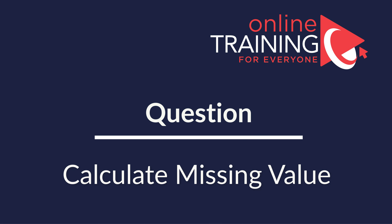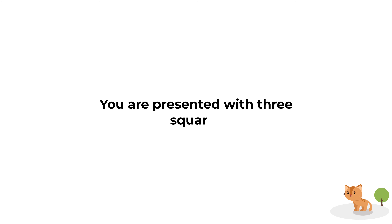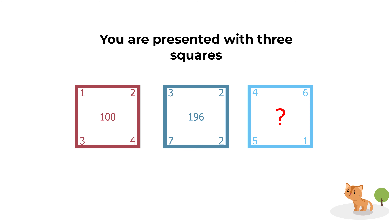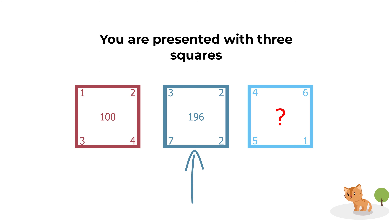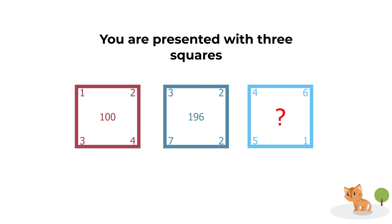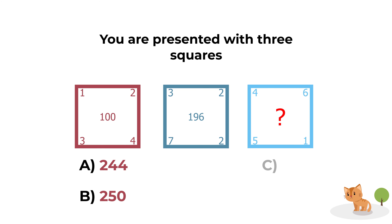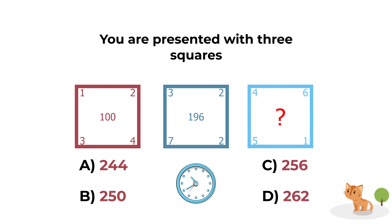Here's an amazing question which tests your ability to quickly come up with solutions. You're presented with three squares, each of a different color, with numbers in the corners and a number in the middle. The brown square has corners 1, 2, 3, 4 and middle 100. The dark blue square has corners 3, 2, 2, 7 and middle 196. The light blue square has corners 4, 6, 1, 5 and the middle number is missing. Choices: A, 244; B, 250; C, 256; D, 262.